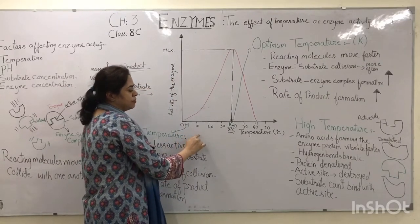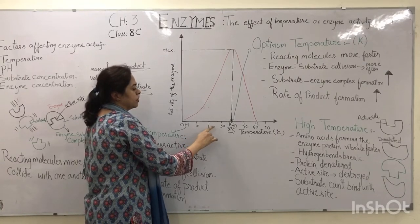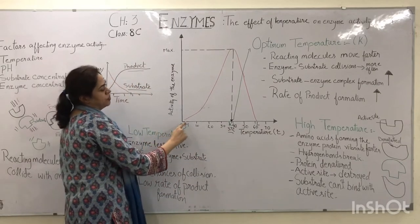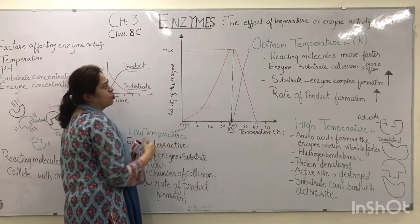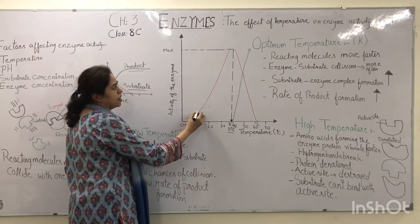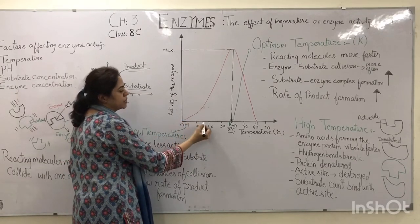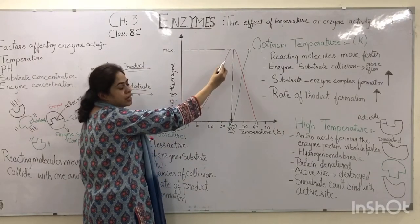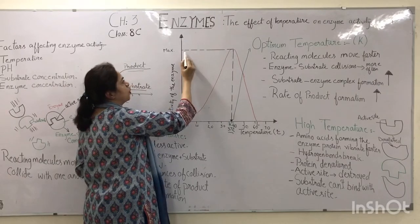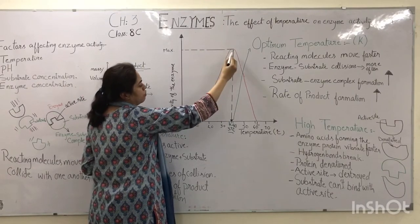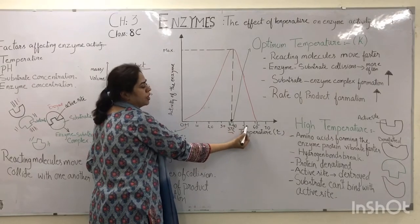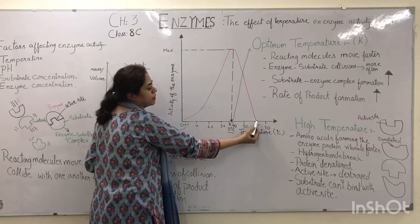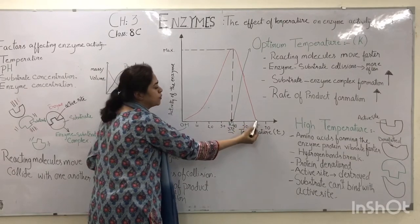The temperature rises every 10 degrees up to 70 degrees centigrade. The curve starts at zero, showing low enzyme activity, and as the temperature rises with every 10 degree increment, the activity of the enzyme also rises until it reaches a maximum point. Above this temperature it begins to fall again until it reaches zero, showing that enzyme activity has dropped to zero.